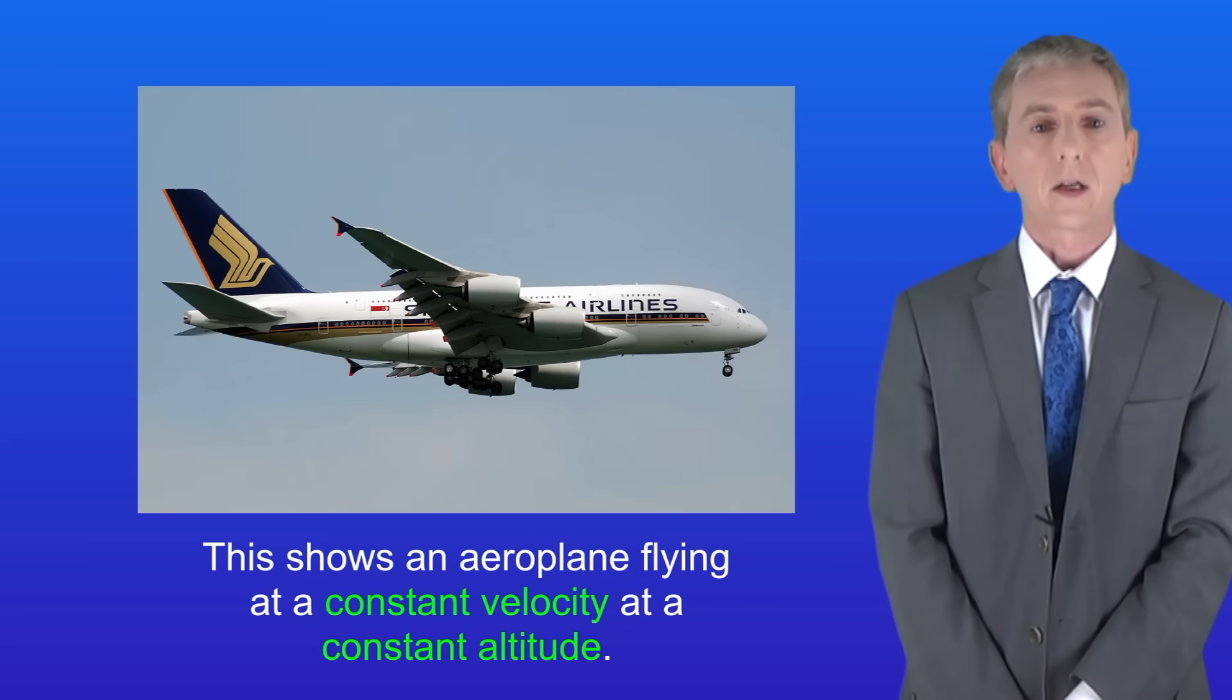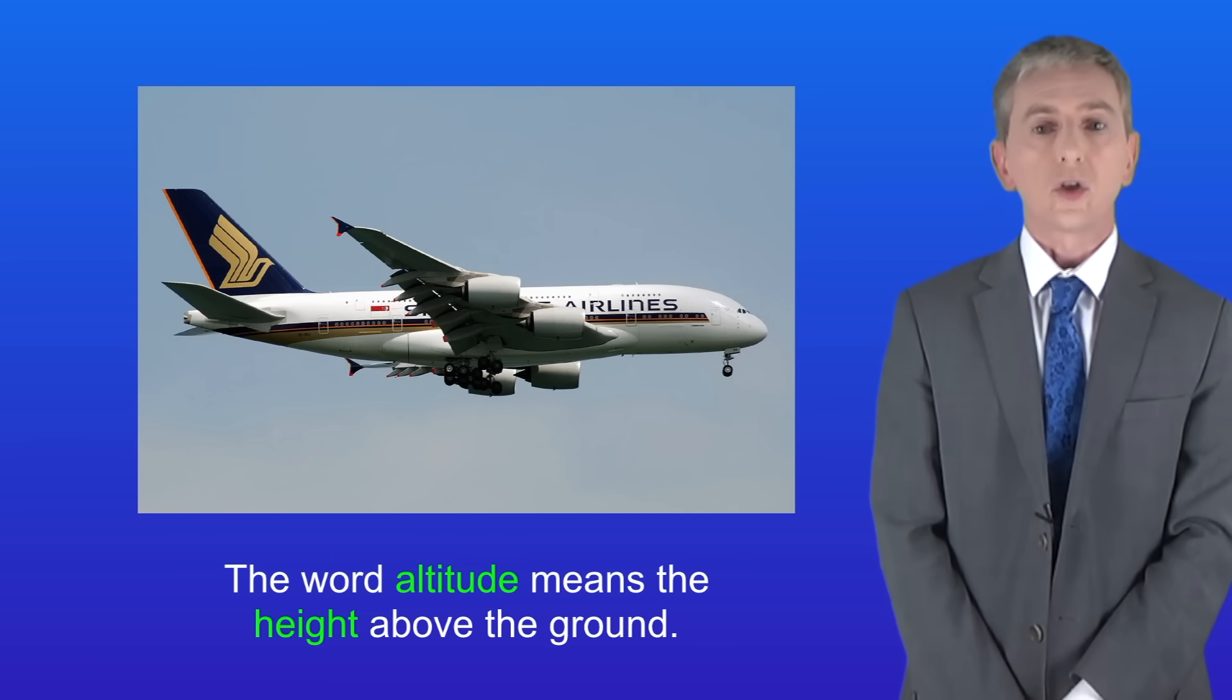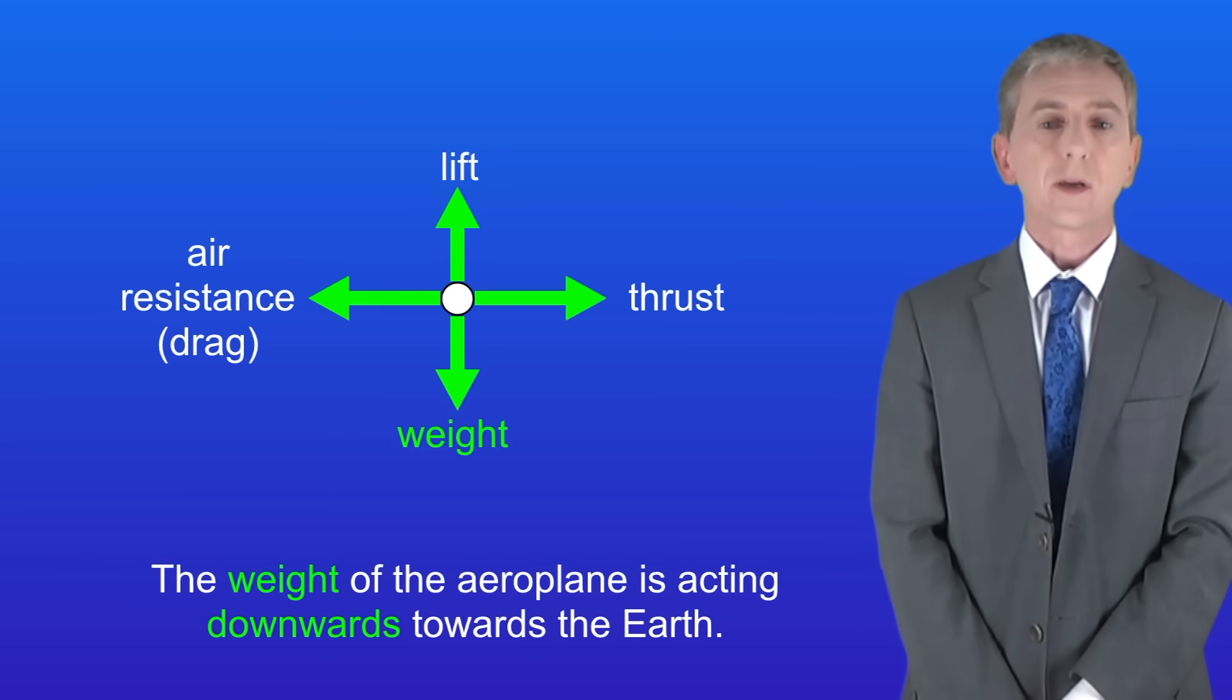I'm showing you here an aeroplane flying at a constant velocity at a constant altitude, and the word altitude means the height above the ground. We're going to finish now by looking at the forces involved. So here's the free body diagram.